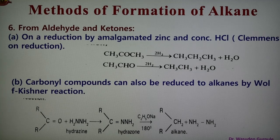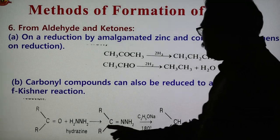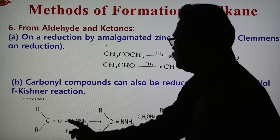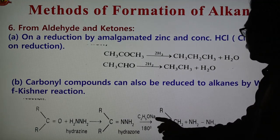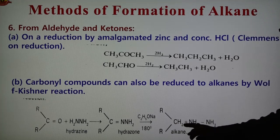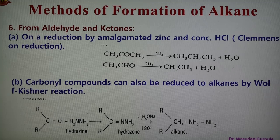A second method to reduce carbonyl compounds to alkane is the Wolff-Kishner reduction. In this reaction, the carbonyl compound reacts with hydrazine and the intermediate loses nitrogen to give the alkane. The general reaction shows a ketone or aldehyde being reduced: the carbonyl oxygen is replaced by two hydrogen atoms and water is released, giving the corresponding alkane (RCH2R).